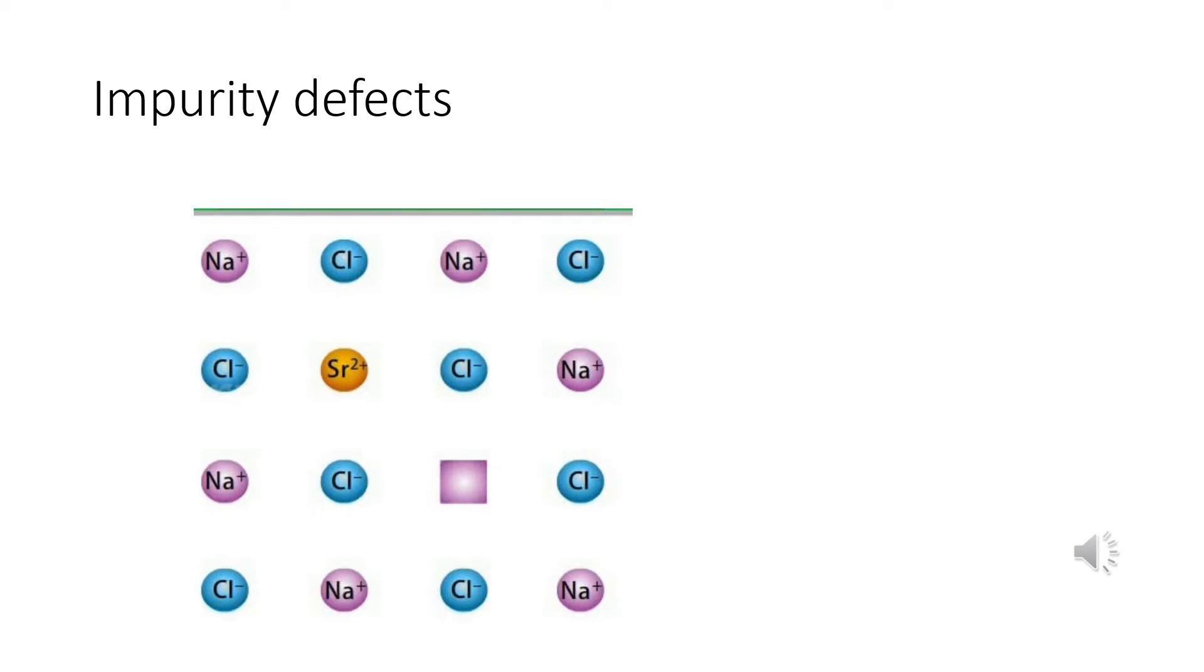This is impurity defect. In molten sodium chloride containing a little amount of strontium chloride is crystallized. Some of the sites of Na+ ions are occupied by Sr2+ ions. Each Sr2+ replaces two Na+ ions. It occupies the site of one ion and the other site remains vacant. This strontium chloride will act as an impurity defect. So, this kind of defect is known as impurity defect.